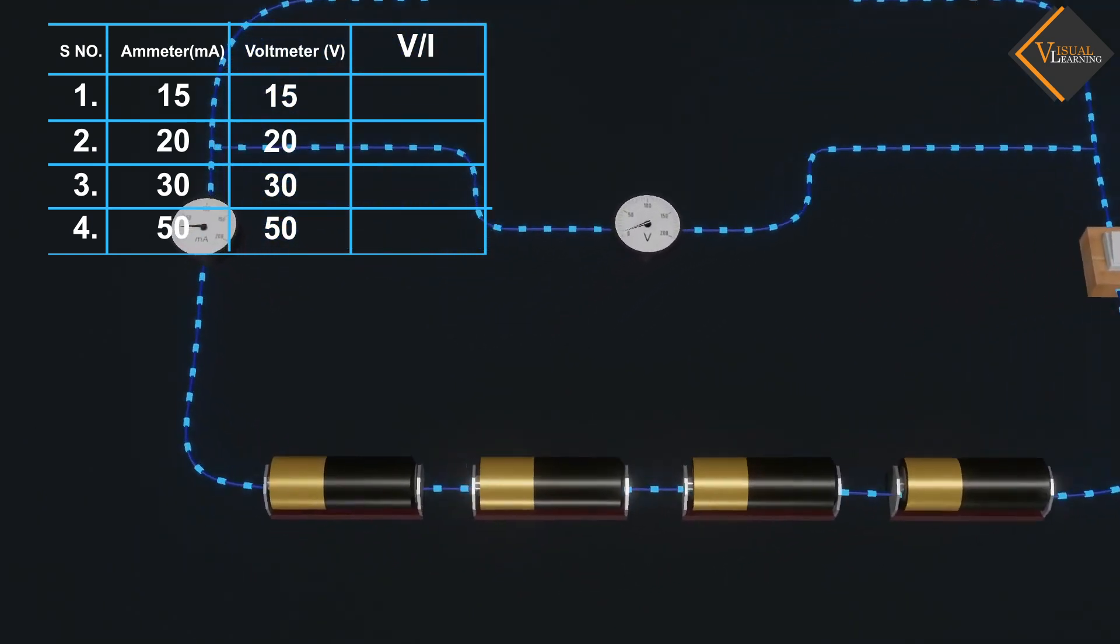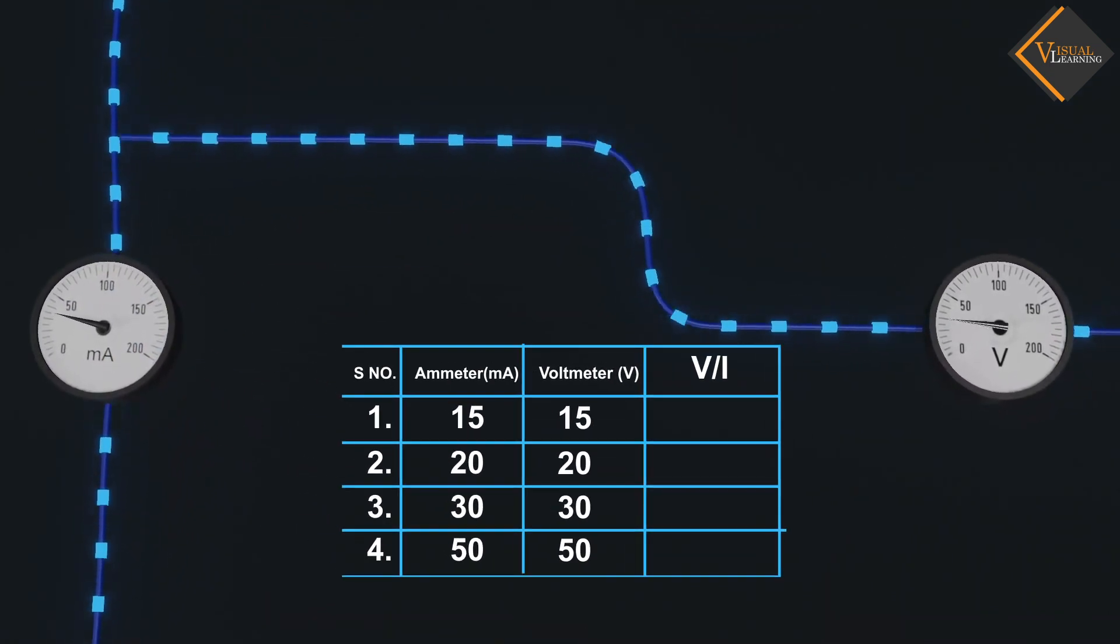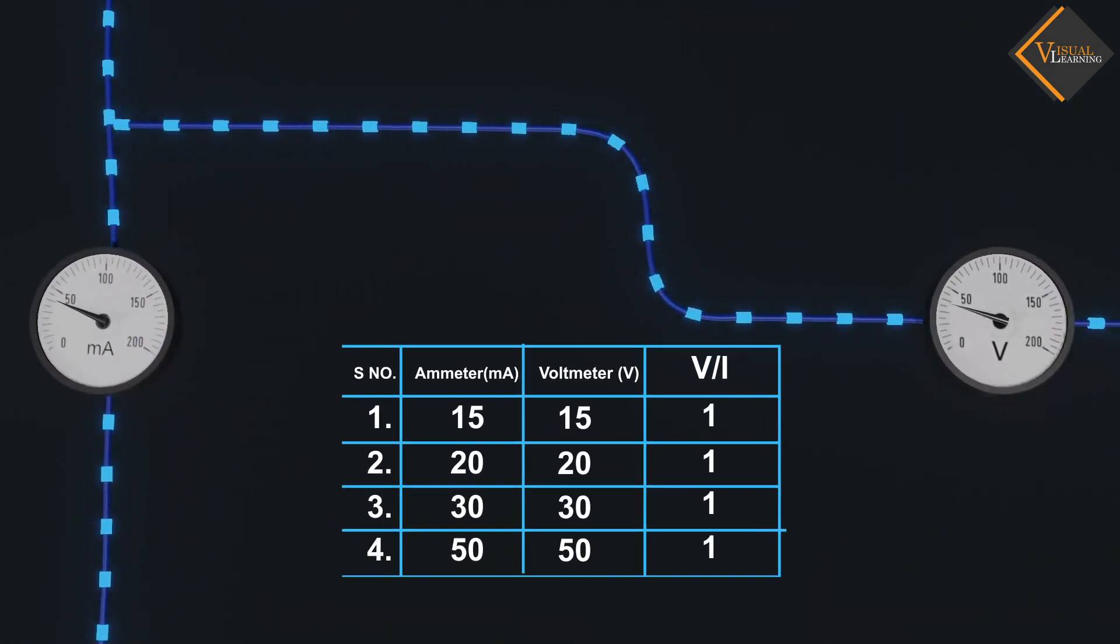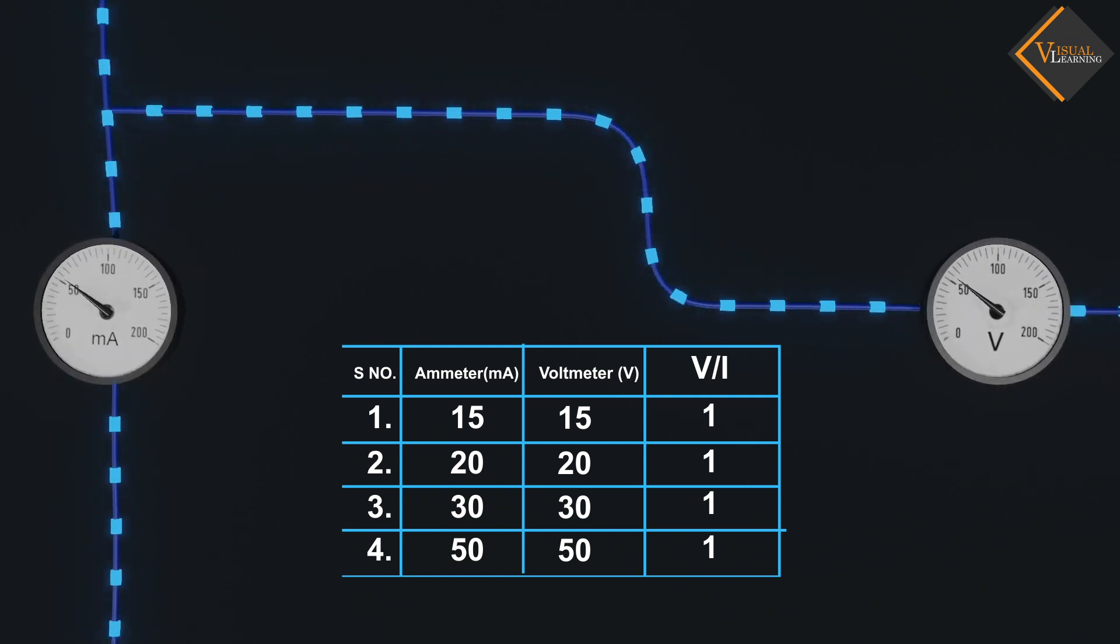Now calculate the ratio of voltage to current for each pair of potential difference and current. You will find that approximately the same value for the ratio of voltage and current is obtained in each case.